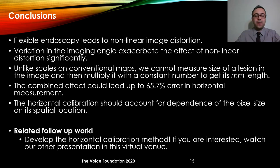In conclusion, flexible endoscopy leads to nonlinear image distortion. Variation in the imaging angle exacerbates the effect of nonlinear distortion. Unfortunately, unlike a scale on a conventional map, we cannot measure the size of a lesion in the image and then multiply it with a constant number to get its millimeter size. The analysis showed that the combined effect could lead to as high as 65% error in horizontal measurement. Finally, horizontal calibration should account for the dependence of pixel size on its spatial location. If you are interested to see how we could account for the effect of spatial location during calibration, come and see our other presentation in this virtual venue.